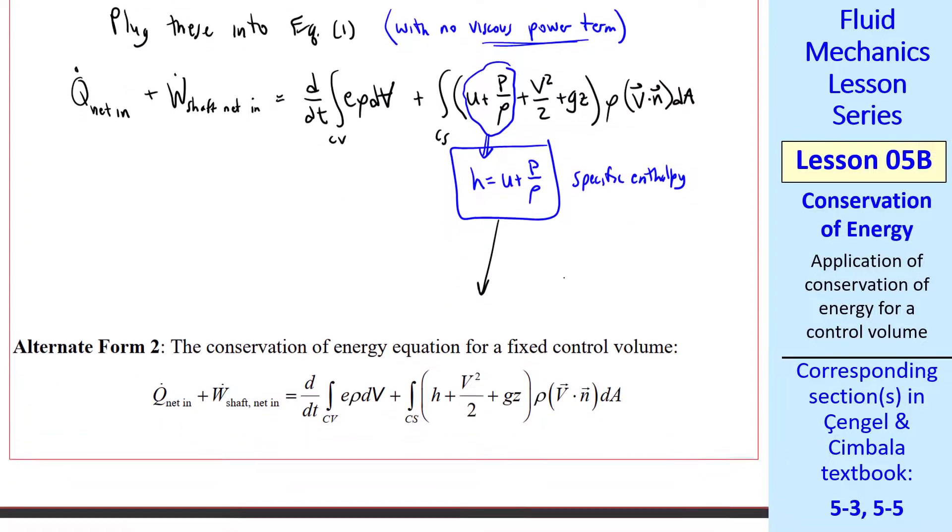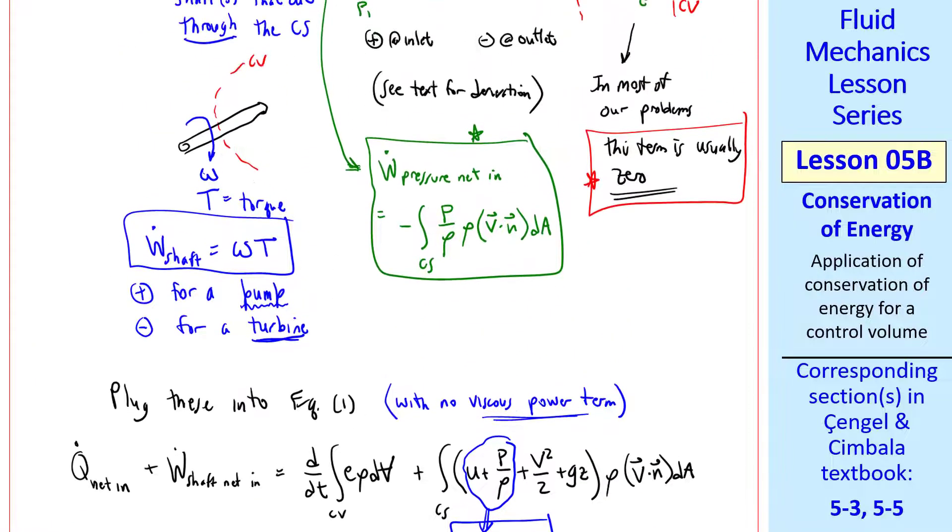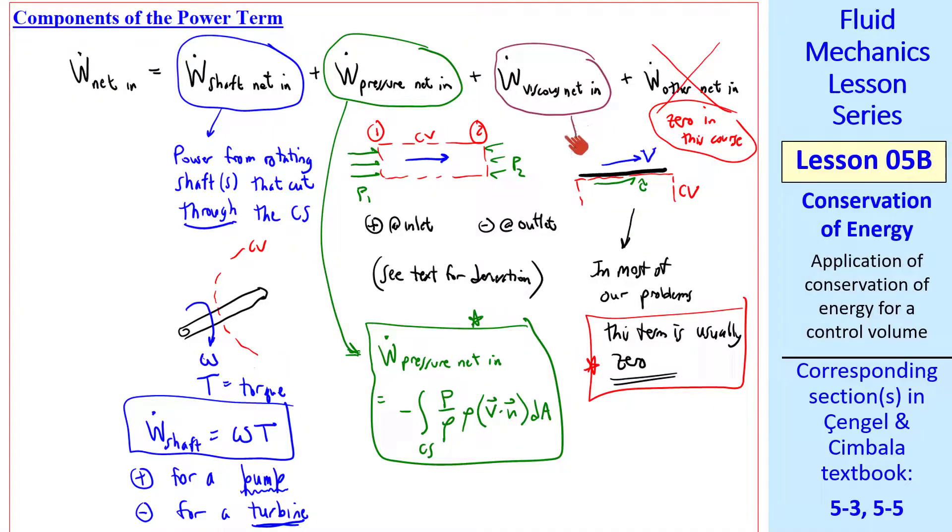Then I typed up the final form of this equation, which I call alternate form two, conservation of energy equation for a fixed control volume. I'll call that equation two. Notice that it is exact for a fixed control volume, as long as we pick a control volume where this viscous power term is zero, and we have no other power terms.